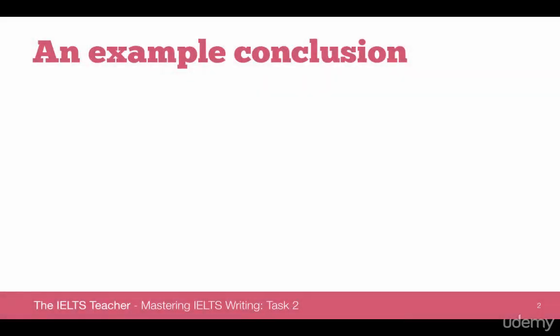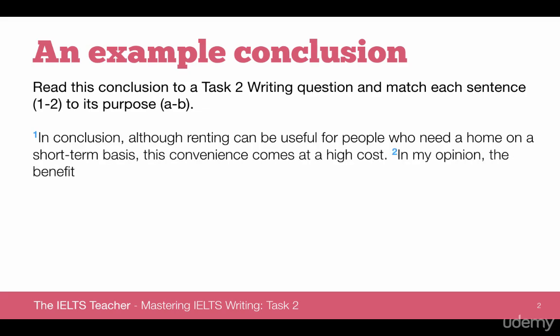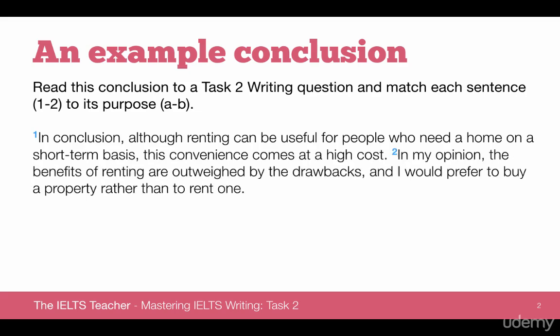Let's start by having a look at an example conclusion. We have a short exercise here — I just want you to read this conclusion to a Task 2 writing question and match each sentence 1 to 2 to its purpose A to B. In conclusion, although renting can be useful for people who need a home on a short-term basis, this convenience comes at a high cost. In my opinion, the benefits of renting are outweighed by the drawbacks and I would prefer to buy a property rather than to rent one. Can you match them up — either we're summarizing the key points or we're giving our opinion?